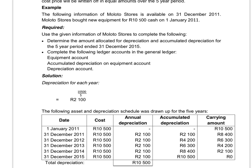Good morning. We will pay attention to depreciation on fixed assets today. We will do two methods. The one method is the cost price method, that's also called the straight line method or fixed installment method.